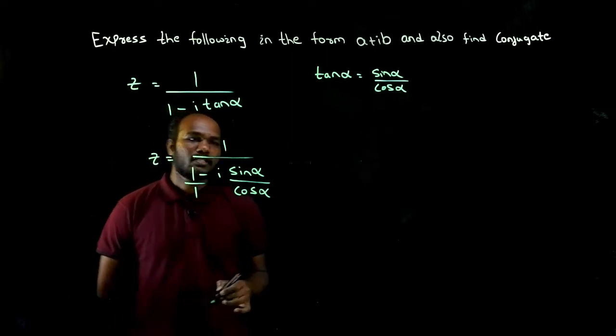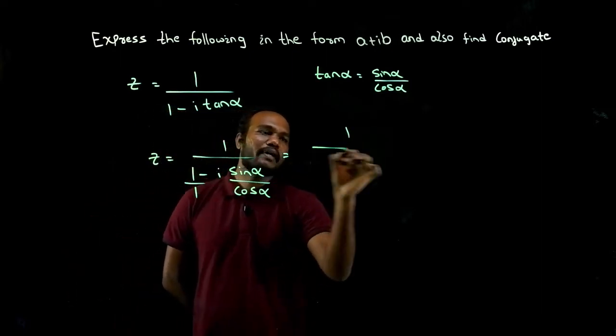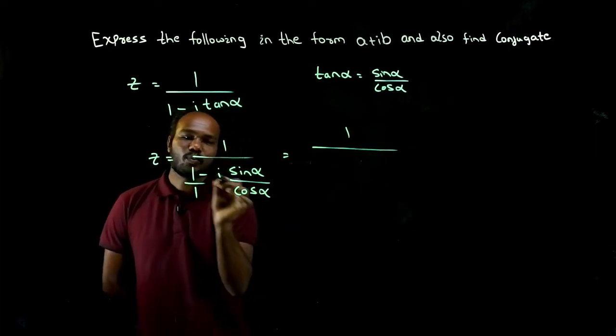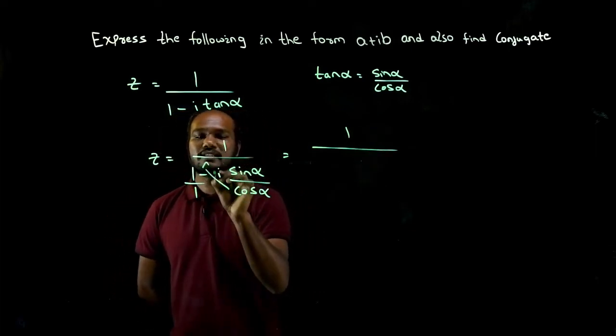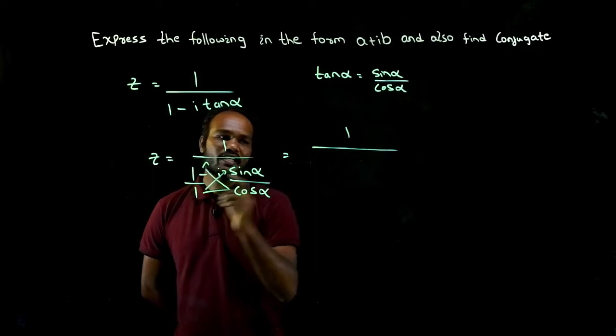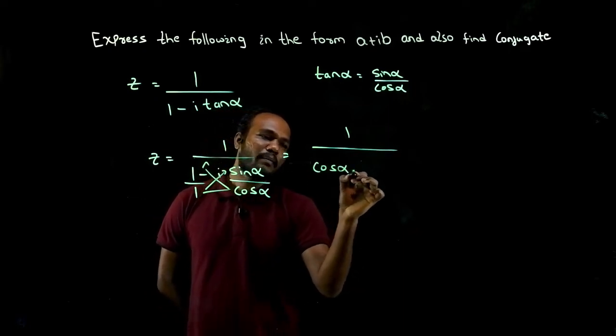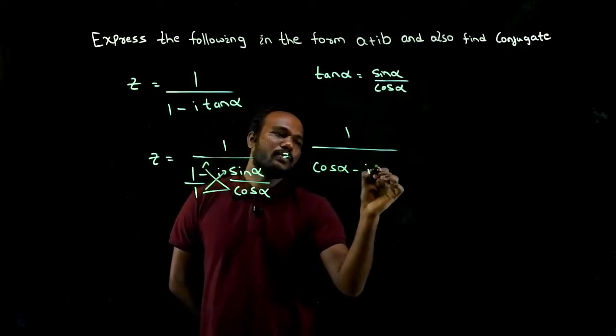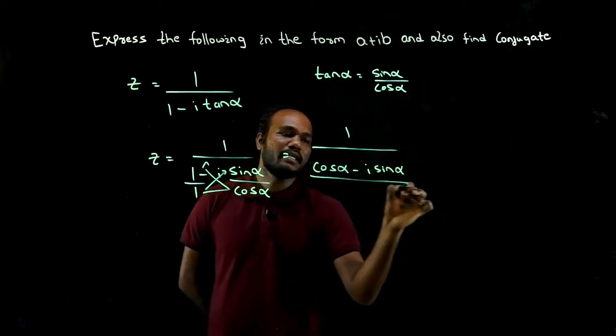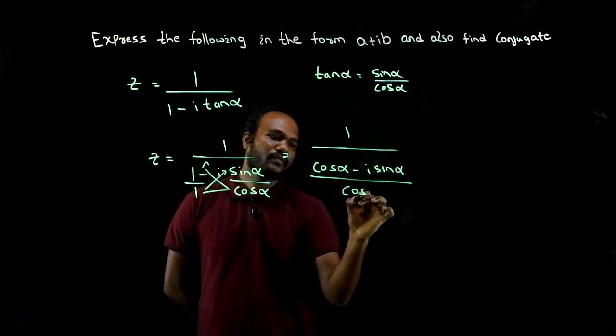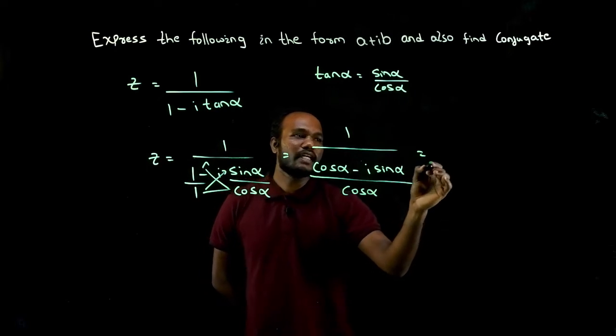There is nothing in the numerator, means there will be one. So how to take LCM? 1 into cos alpha, this into this. Now cos alpha into 1 is cos alpha minus I into sine alpha, divided by cos alpha. I'll send this cos alpha upside.